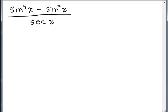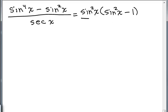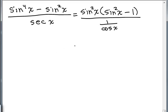The first thing I'm going to do is factor out a sine squared X out of the numerator. That gives me sine squared X times (sine squared X minus 1). In the denominator, I'm going to write that secant of X as 1 over cosine of X. Now, sine squared X minus 1 looks not quite like cosine squared X, because that would be 1 minus sine squared X. But this is just the opposite. So sine squared X minus 1 can be written as negative cosine squared X. Also, dividing by 1 over cosine X means I could multiply by cosine X in the numerator.